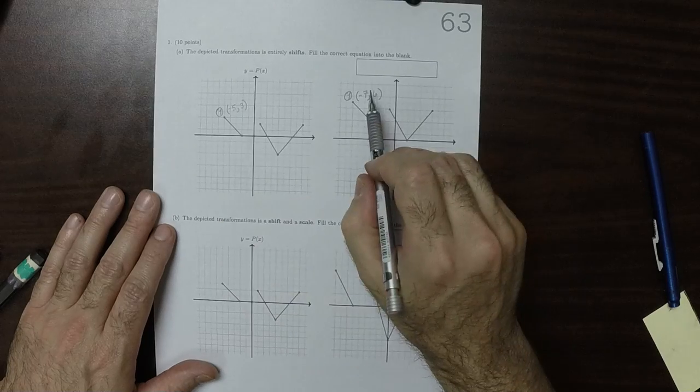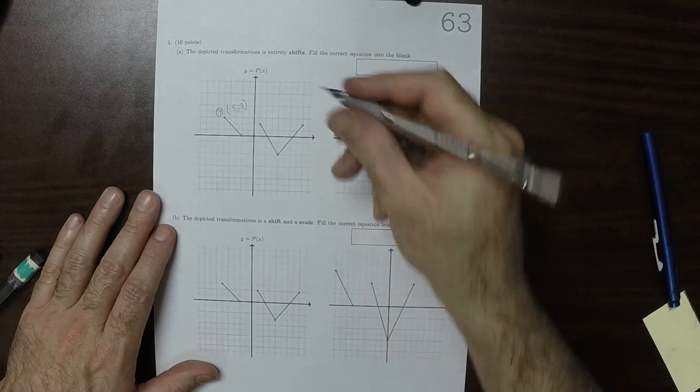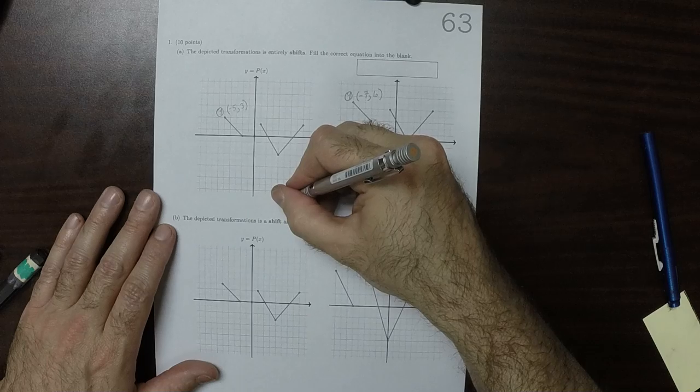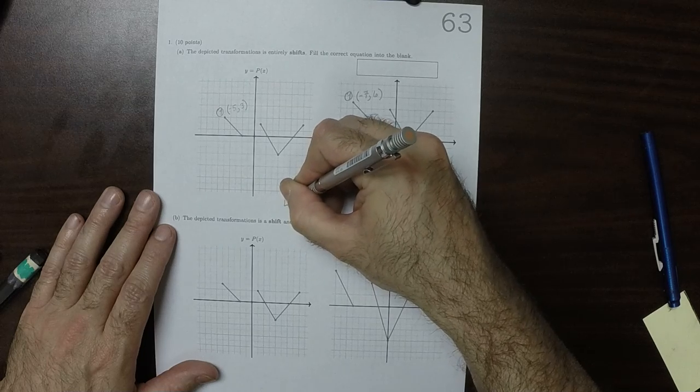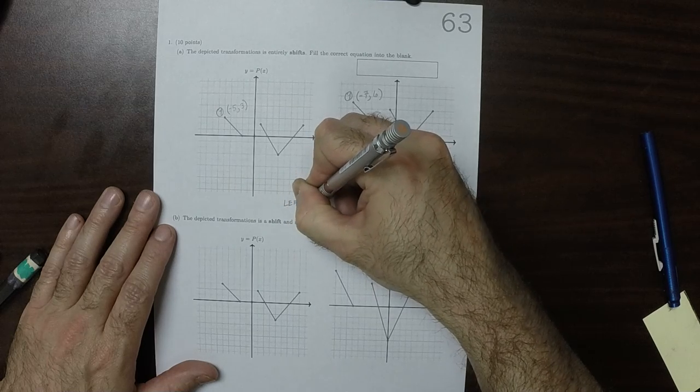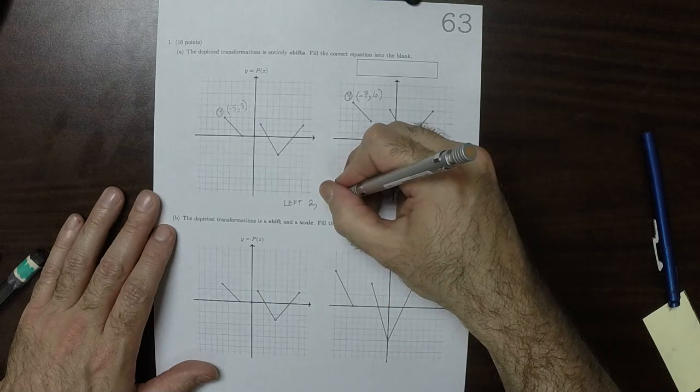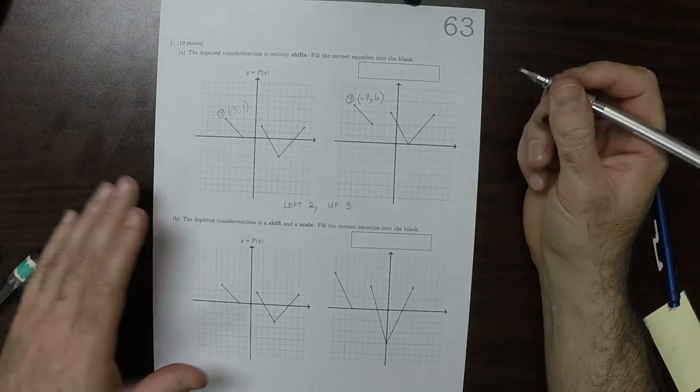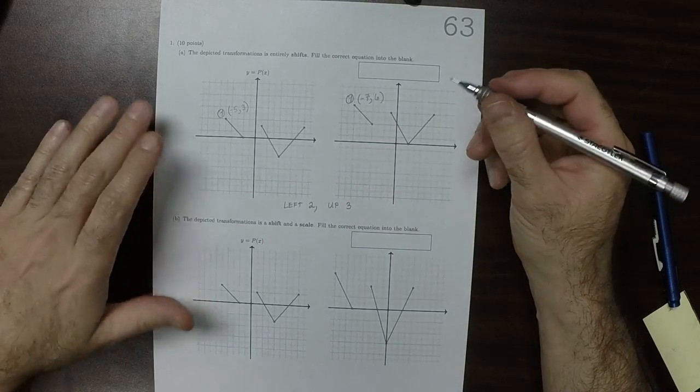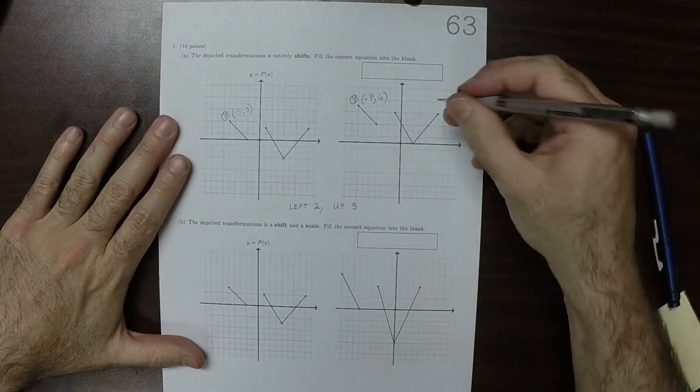So that one point shifted left 2, and then up 3. Let's see if the rest of them did that. How about let's select, say, this point.